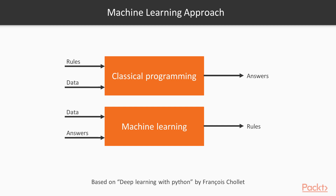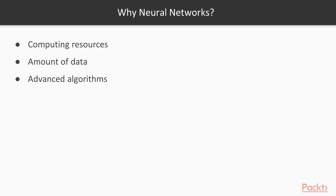Let's look into why the machine learning approach and especially neural networks became so popular in recent years. First of all, computing resources became a lot cheaper, and with the introduction of public cloud it became extremely easy and affordable to use these resources at scale. Secondly, machine learning requires a lot of data, and right now there are a lot of public and private datasets available for training. Finally, advanced algorithms allowed building and training more complex neural networks.